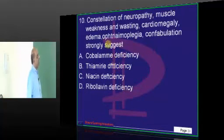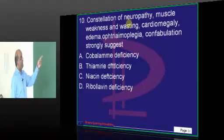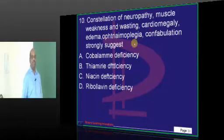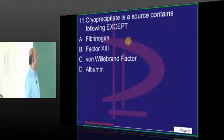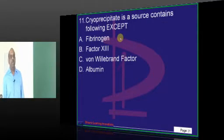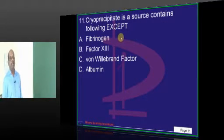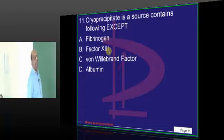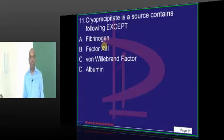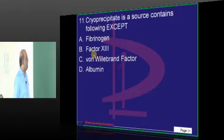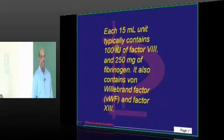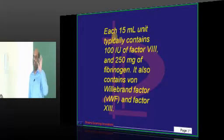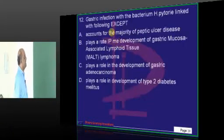Neuropathy, muscle weakness, wasting, cardiomegaly with confabulation is classical of thiamine deficiency — that is what you need to remember. Cryoprecipitate does not have albumin. What does it have? Von Willebrand factor, factor 13, and fibrinogen — these are all the constituents of cryoprecipitate. This is a very standard stamp-like question in the exam.